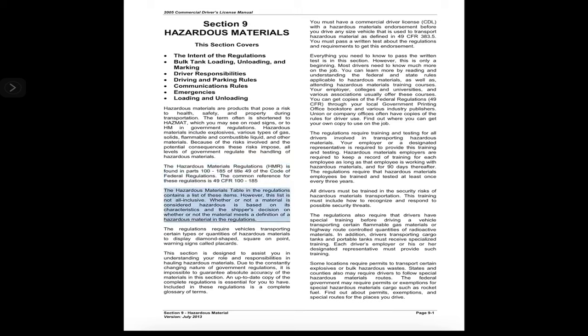The hazardous materials table in the regulations contains a list of these items; however, this list is not all-inclusive. Whether or not a material is considered hazardous is based on its characteristics and the shipper's decision on whether the material meets a definition of a hazardous material in the regulations. The regulations require vehicles transporting certain types or quantities of hazardous materials to display diamond-shaped warning signs called placards.